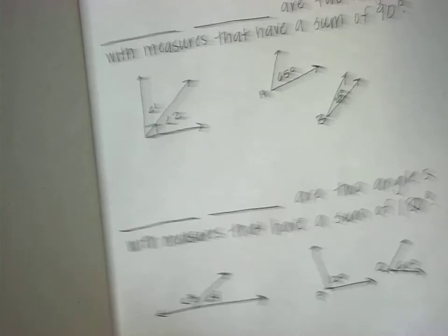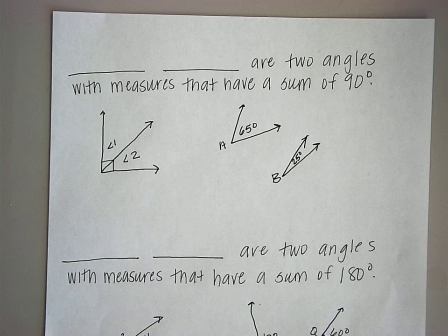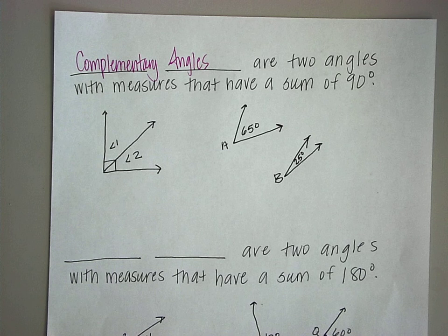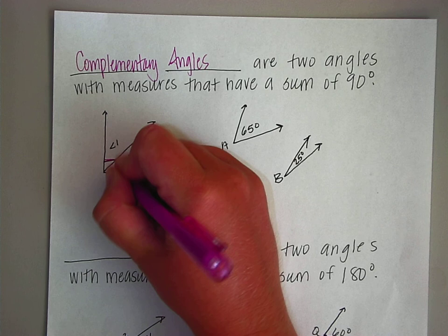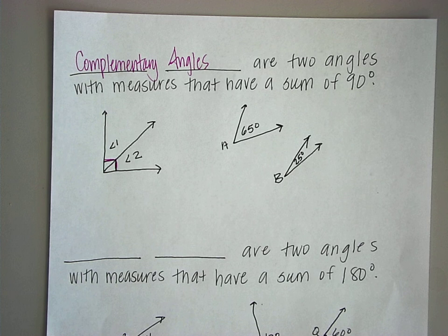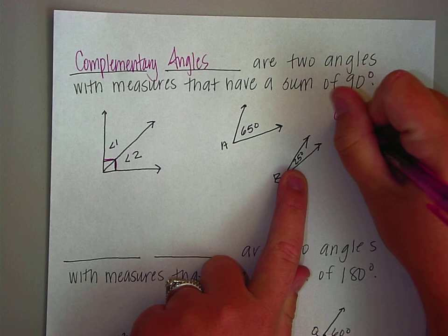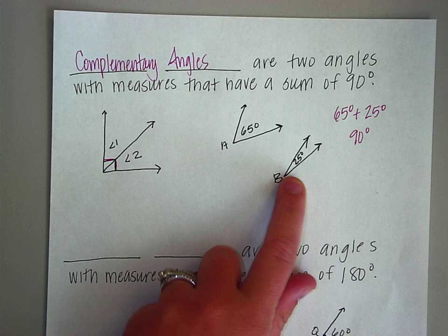Our next type has a sum of ninety degrees. These are called complementary angles — they have a sum of ninety. If you look at this first example there's a box, and that box means right angle. A right angle has a measure of ninety degrees, so angle one and angle two are complementary. Or you could have them separated — look, we have sixty-five and twenty-five. Those equal ninety, so these are also complementary. Complementary angles have a sum of ninety.